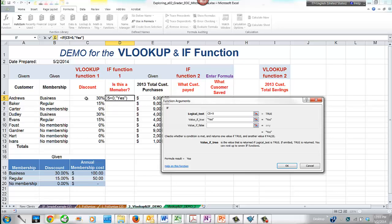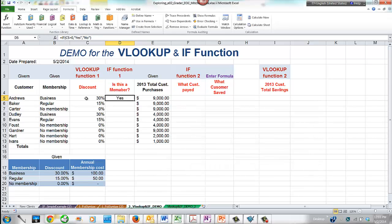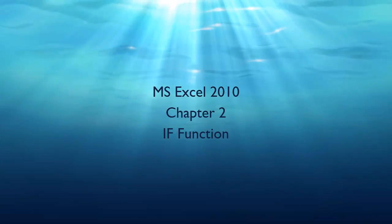Press Tab to move to the value IF FALSE argument. Type quotation marks, the word no, close quotation marks, and then click the OK button. Now verify that the result for the first record, Andrews, who is a business member, is yes. The last step is to copy the formula to the remainder of the customers. And this ends the tutorial about the IF function.